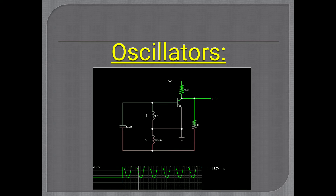An oscillator is also defined as a circuit that generates an AC output signal having sine, square, triangular, sawtooth, or pulse shape without the help of an external input signal. It is also an unstable amplifier which converts DC energy into AC energy at very high frequency or at a desired frequency.